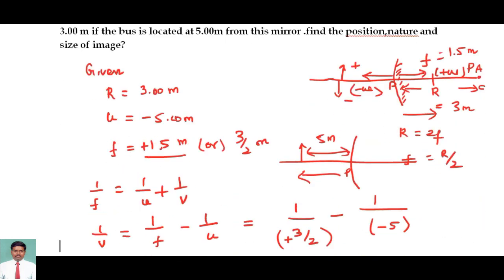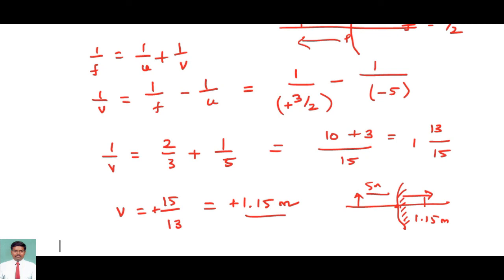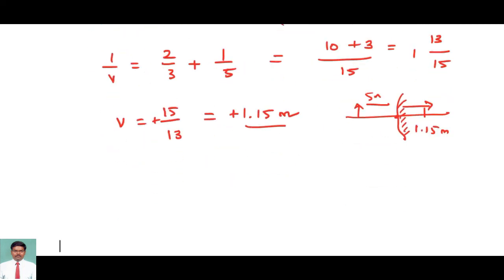The nature and size of the image I have to estimate. The nature of the image is going to be an erect image, as we know theoretically. The magnification is given by the formula h prime by h equals minus v by u.